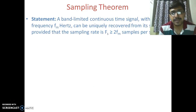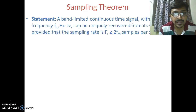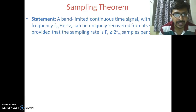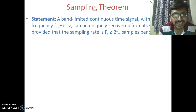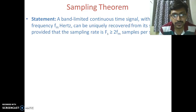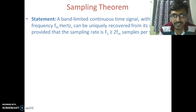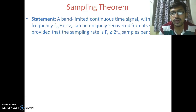Now we will see the sampling theorem — that is why the sampling theorem is needed. Whenever we perform sampling, the sampling theorem must be satisfied. Its statement is: a band-limited continuous time signal with highest frequency fm hertz can be uniquely recovered from its samples, provided that the sampling rate fs is greater than or equal to 2fm samples per second, where fs is the sampling frequency and fm is the maximum frequency content of the signal.